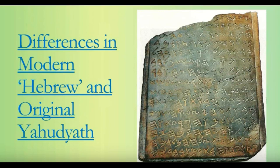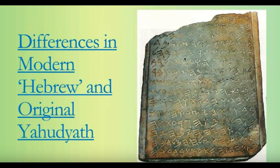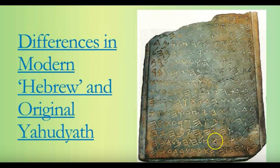Here is an ancient scroll that actually has the letters written down in the ancient original Yahudiith language. Remember, it goes from right to left. And right here we even see the name of our creator written right there — Yahuwah.